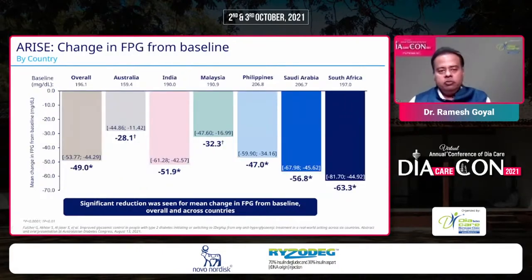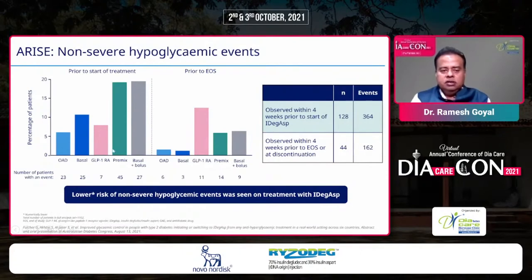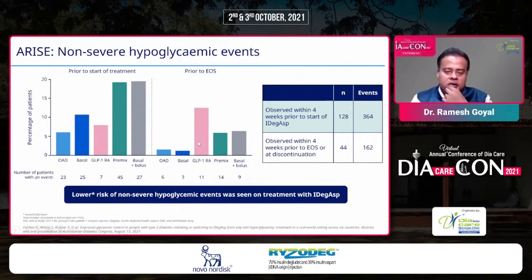Regarding change in fasting plasma glucose from baseline, there was significant reduction across all countries — overall approximately 49 mg/dL, and 52 mg/dL in the Indian population. On non-severe hypoglycemic events, there was a lower risk of non-severe hypoglycemia on IDegAsp treatment. Comparing rates pre-treatment versus end of study, significant reductions were seen in all categories except where Ryzodeg was added to ongoing GLP-1 receptor agonist therapy. Overall, the number of non-severe hypoglycemic events reduced from 364 to 162.